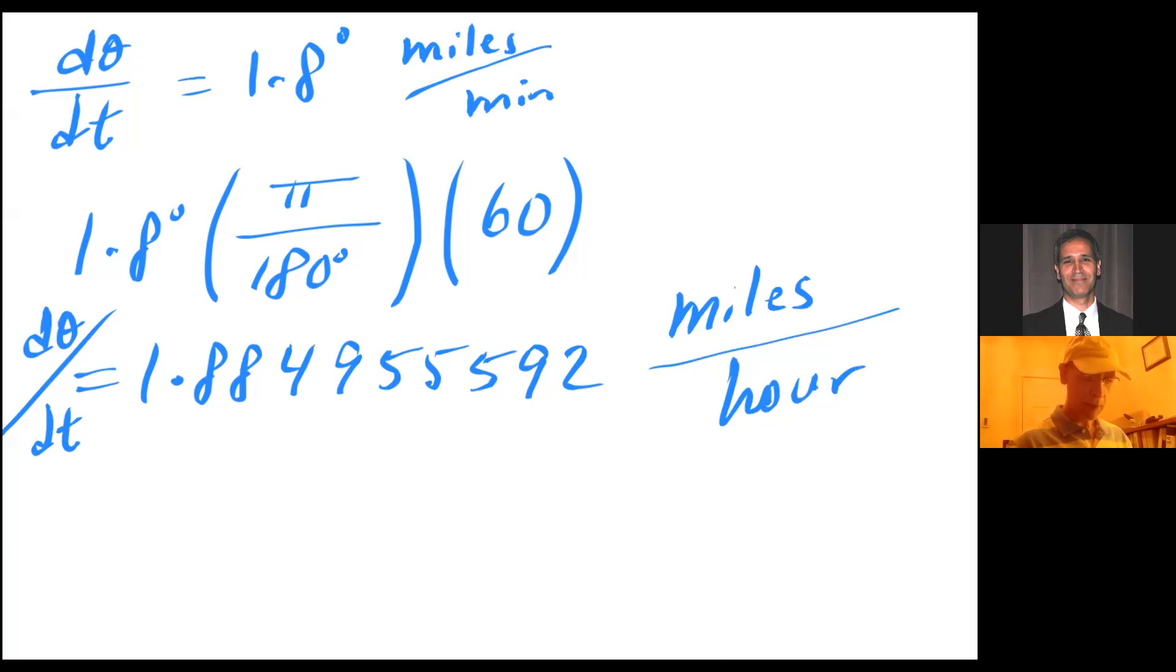So now, looking at the picture. Here's my theta. I know this is 4.1. I know this is x. So I can say that tangent of theta equals opposite over adjacent. So 4.1 over x.